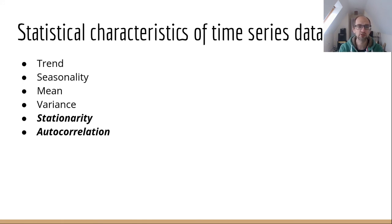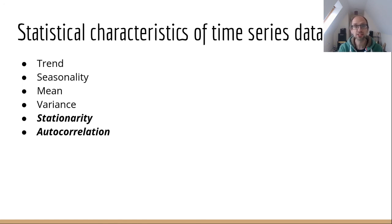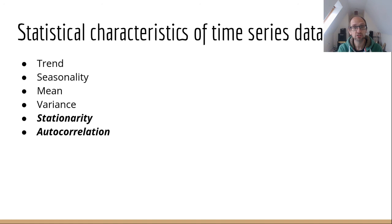The second concept, autocorrelation, means that the number of newspaper sales on a Friday is related to the number of newspaper sales on a Thursday, which in turn is related to Wednesday's sales. So there's some sort of correlation within the data, but it's over time. And again, that is a challenge both in terms of interpreting what is happening within the data, but also poses challenges for the methods you need to accurately model that data.